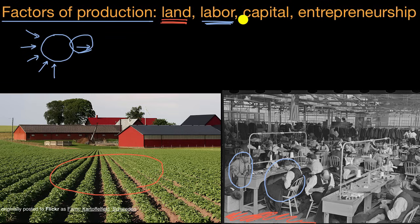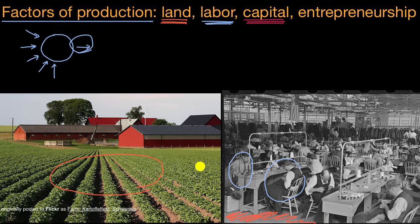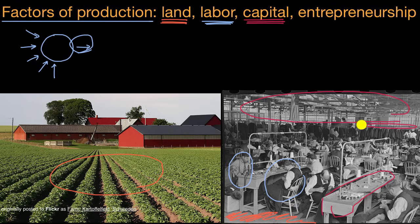Capital is an interesting one. It means one thing in everyday language, and something slightly more specific in an economics context. In an economic context, capital is something produced to produce other things. Examples of capital would be tools that you use to produce other things, a building that you need in order to produce other things, or the machinery in a factory. In these two pictures, there are many examples of capital — the table and the tools these folks are using, the whole building itself with all the light fixtures, and the hangers they're putting coats on after producing them.